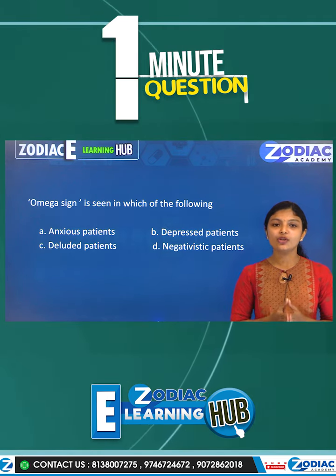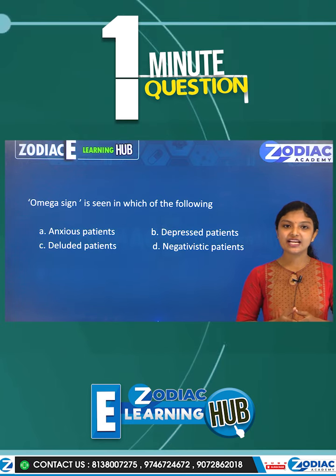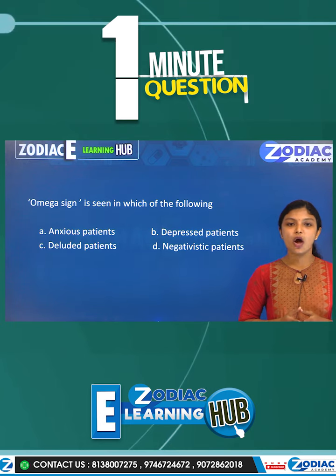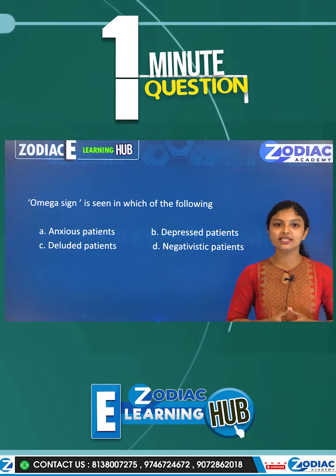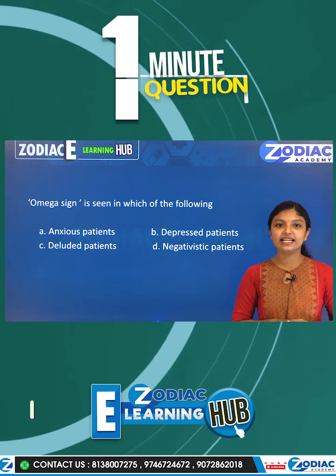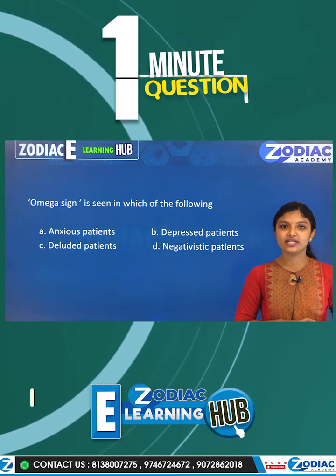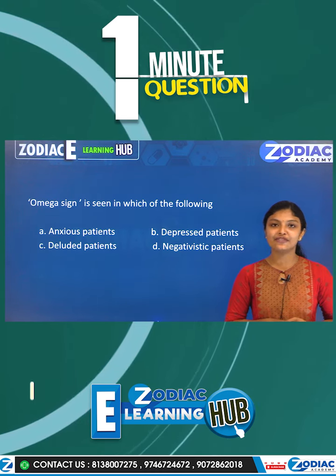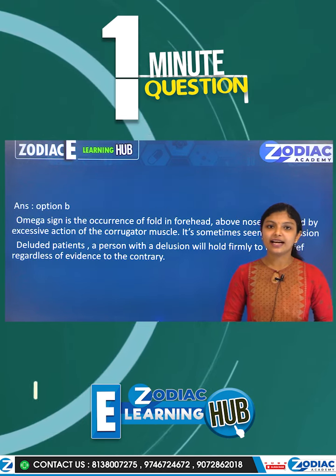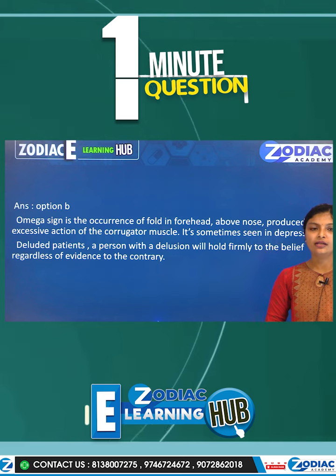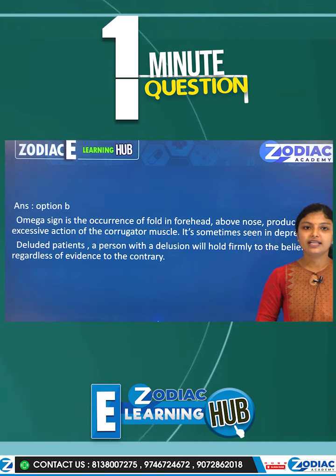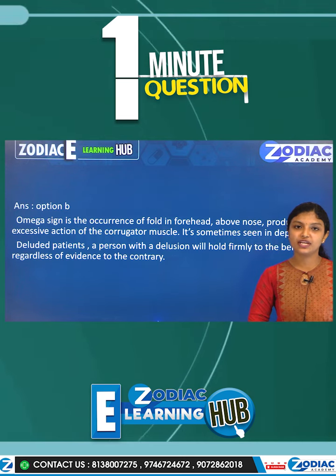The options are: Option A — Anxious patients, Option B — Depressed patients, Option C — Deluded patients, and Option D — Negativistic patients. The right answer is Option B, that is, Depressed patients.